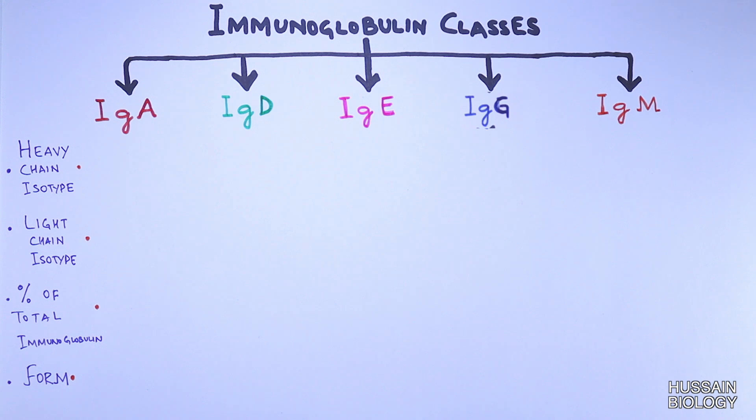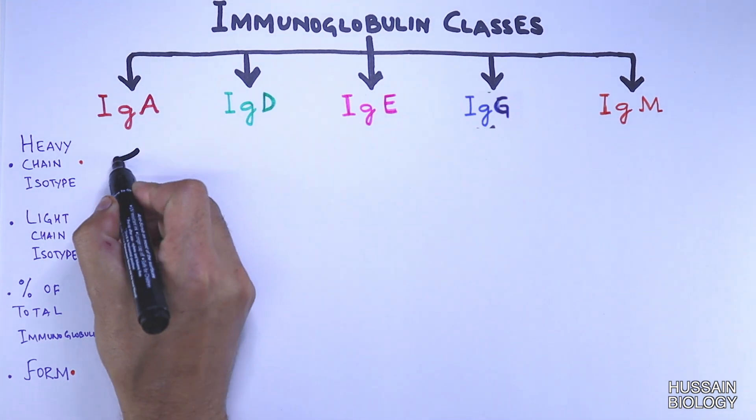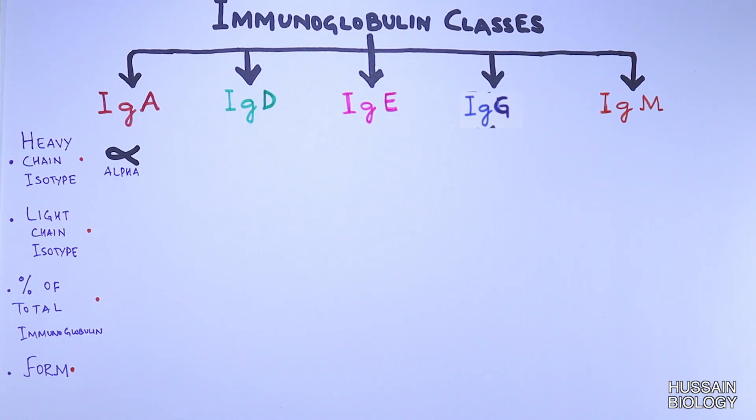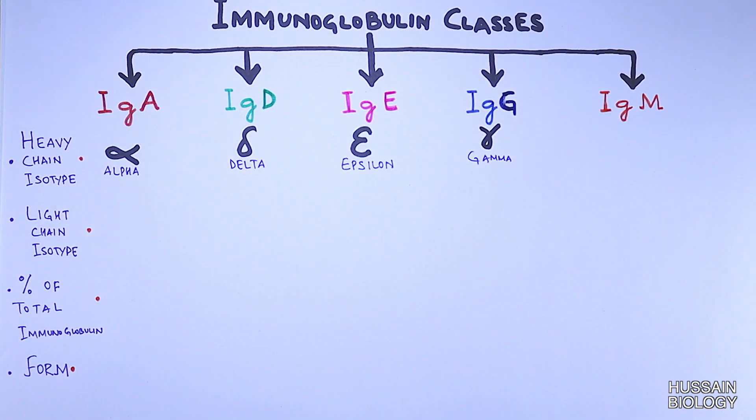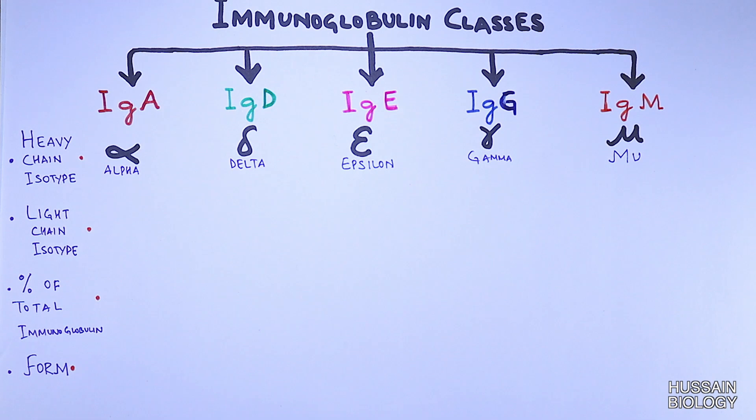We know the immunoglobulins are classified on their heavy chain isotypes. Immunoglobulin A has alpha heavy chain, IgD has delta heavy chain, IgE has epsilon heavy chain, IgG has gamma heavy chain, and IgM has mu heavy chain.